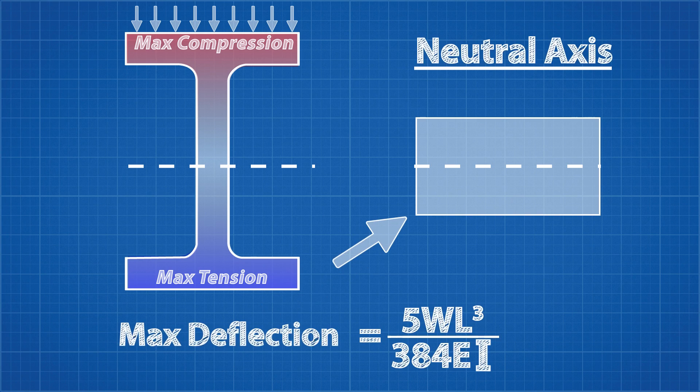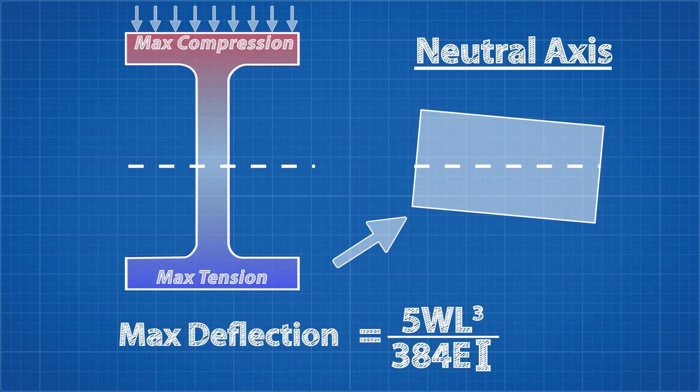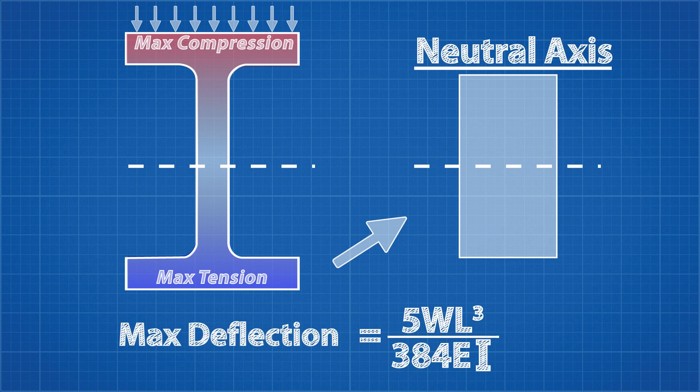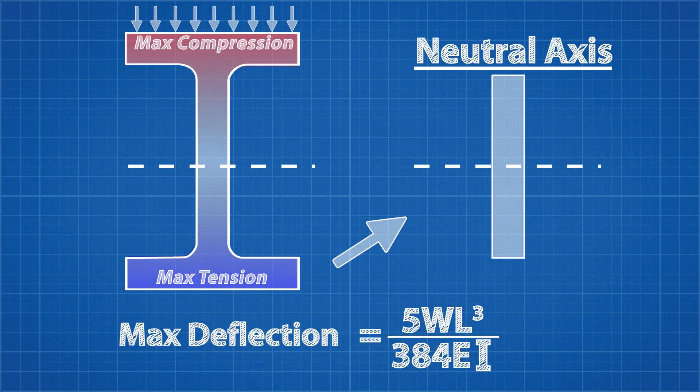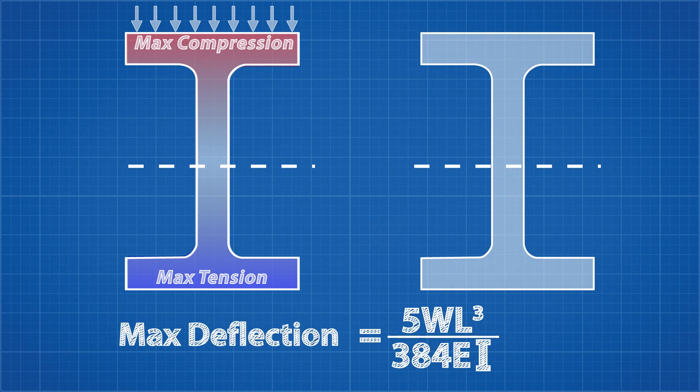So if we place this section under the same bending load, it would actually be stronger if we flipped it over 90 degrees, because now more material is located further from the neutral axis. We could make it even stronger again by reducing this thickness to a minimum, just enough to resist the shear stress, and placing that material at the top and suddenly we're back to the I-beam shape.